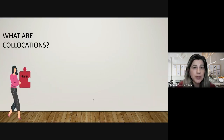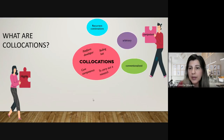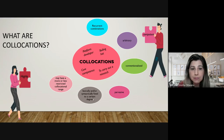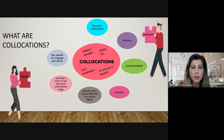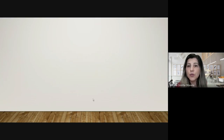What do we understand by collocations? They are recurrent, arbitrary, conventionalized, and pervasive combinations, lexically and/or syntactically fixed to a certain degree. They may have a more or less restricted collocational range, are very specific to a language and culture, and the collocability of their elements may vary significantly from one language to another.